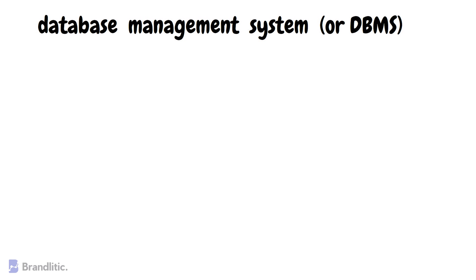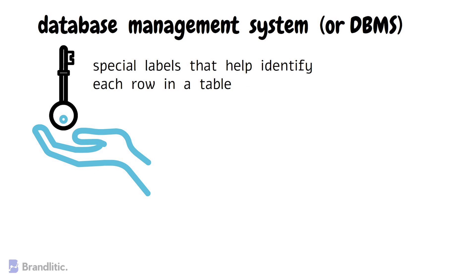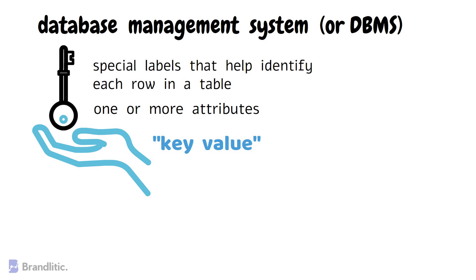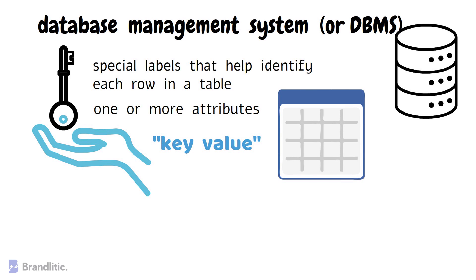A database management system or DBMS needs keys to keep data organized and make it easy to find information quickly. In a DBMS, keys are like special labels that help identify each row in a table. They can be made up of one or more attributes, and each value within a key is referred to as a key value. Keys are a vital component of integrity constraints within a database, and as a table can have potentially thousands of records where some duplication may occur, keys resolve this issue by establishing relationships between different entities efficiently and providing a unique identifier for each record.